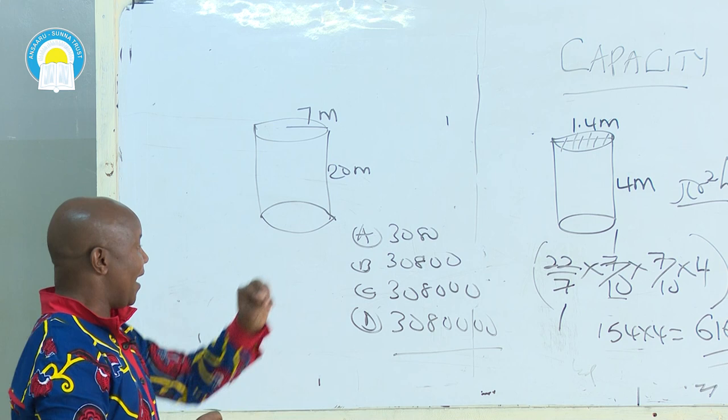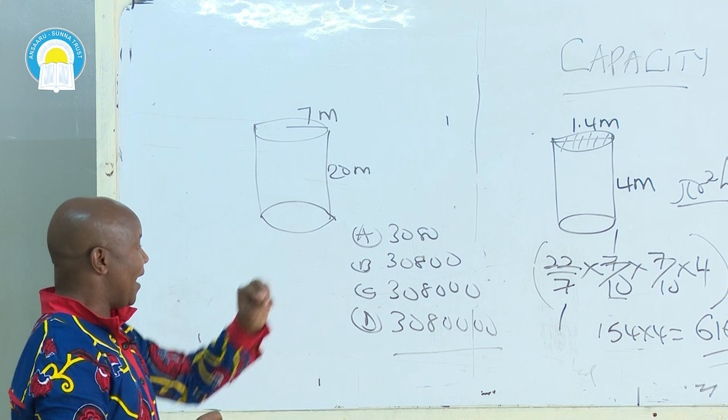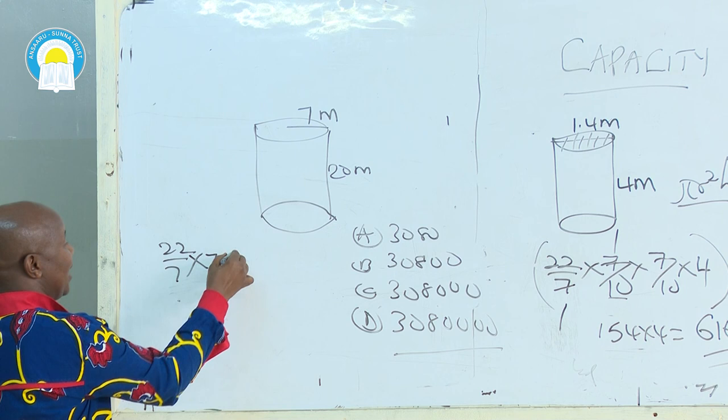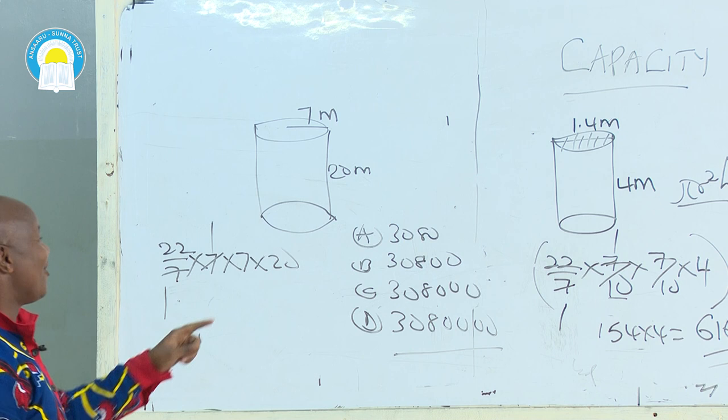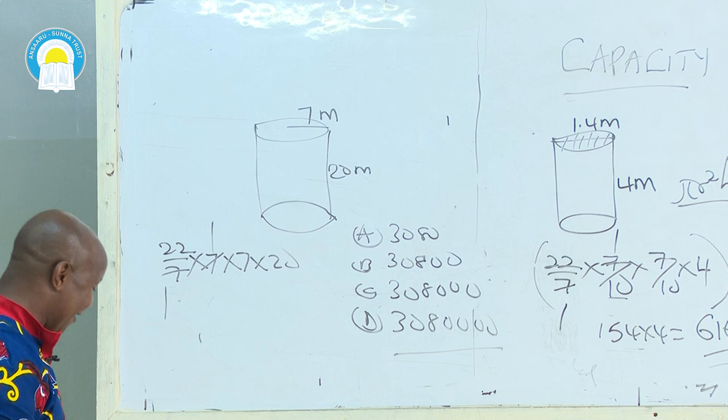In our case, volume of a cylinder = πR². We have 22/7 × 7 × 7 × 20. By 7 and 7 you get 1 and 1. 22 × 7 = 154. Multiplied by 20 gives 3,080 cubic meters. That is the volume.